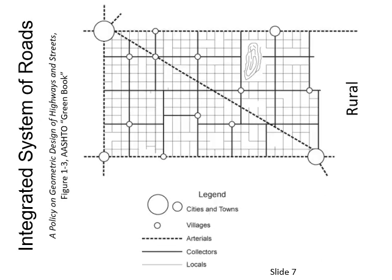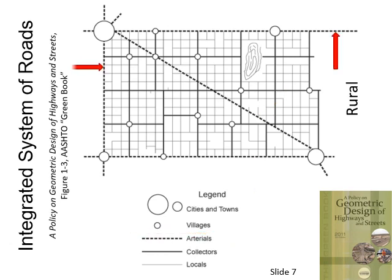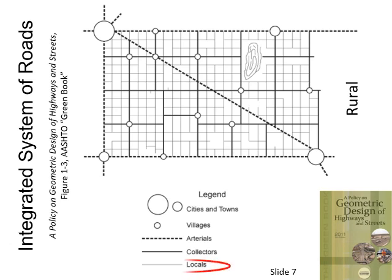A more complete illustration of a functionally classified rural network is shown, also taken from the Green Book. Arterial highways generally provide direct service between cities and larger towns that generate and attract a large proportion of the relatively longer trips. Collectors serve small towns directly, connecting them to the arterial network. Roads of this category collect traffic from local roads serving individual farms and other rural land uses, or distribute traffic to these local roads from the arterials.